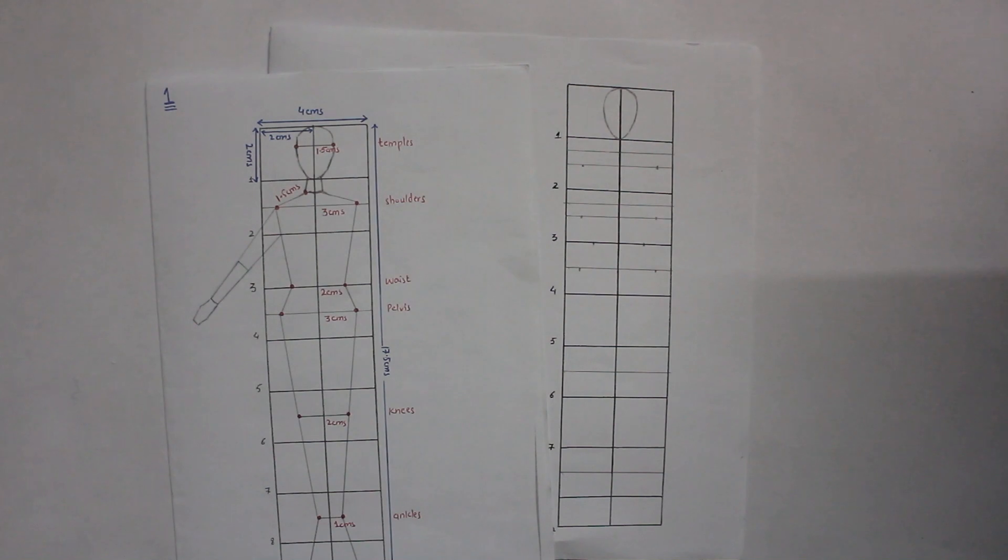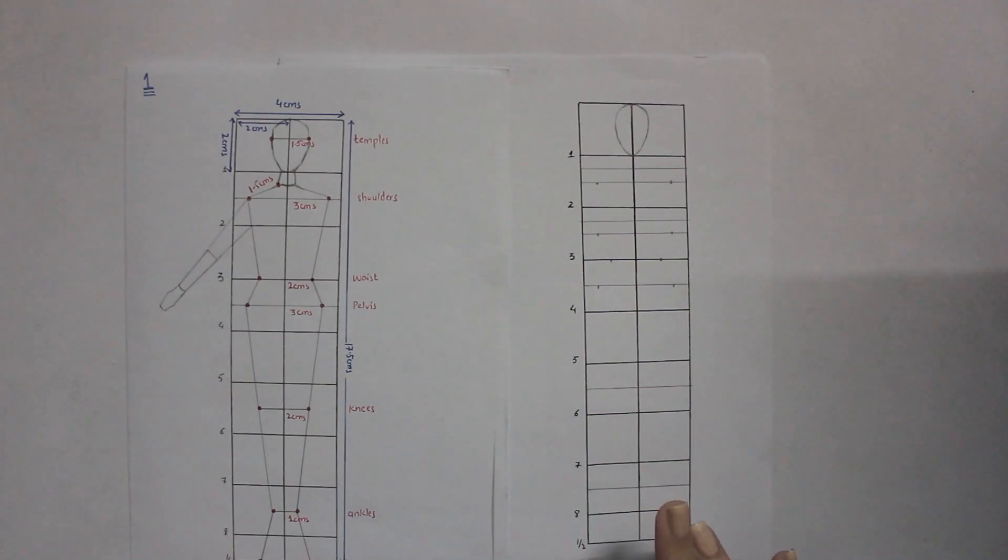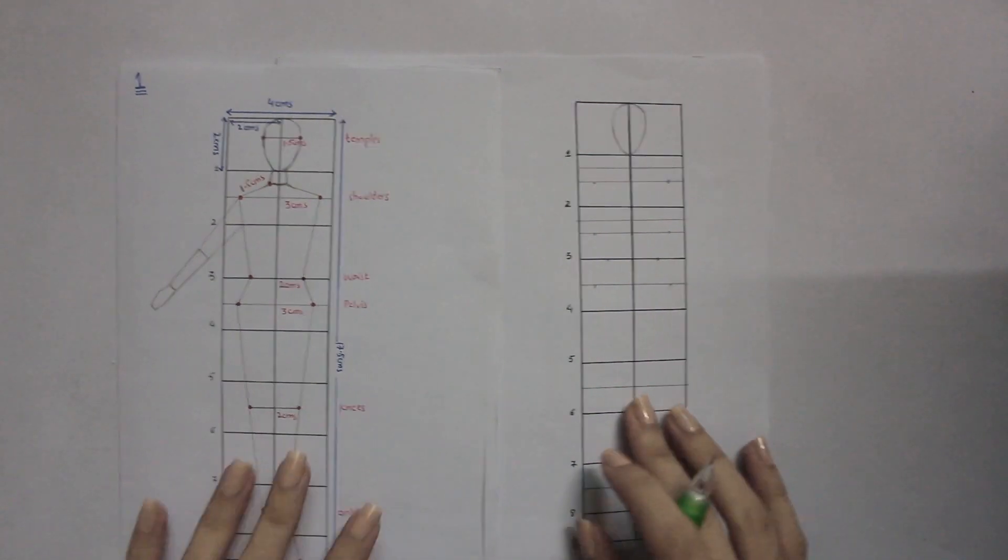Again in the last video we worked on these block figures. We have done it in two stages, so now we will move on to the mature form of the human figure. For that purpose you have to draw the same grid.